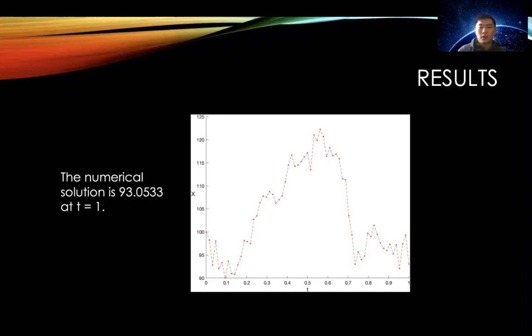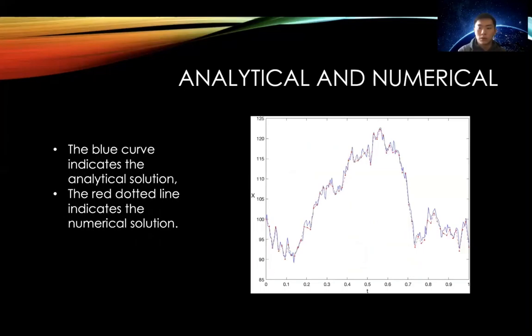This is part A, and for part B, we are going to compare it with the analytical solution. As we can see in this graph, the blue curve indicates the analytical solution, and the red dotted line indicates the numerical solution. We can see that both of them are pretty close to each other.